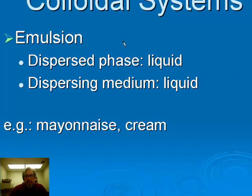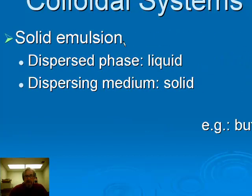Emulsions have liquid particles dispersed through a different liquid. You need two liquids that don't dissolve in one another, but tiny particles can spread throughout the mixture. Mayonnaise and cream are examples, and many cosmetic products are emulsions. A solid emulsion is when liquid colloids are dispersed through a solid — butter and cheese are examples, where tiny liquid bubbles of fat are dispersed through a solid protein network. When you melt cheese in the microwave, you're not really melting anything; there's no phase change — you're just loosening up the solid dispersing medium, releasing liquid that was already there.